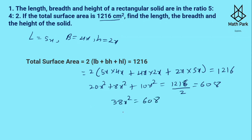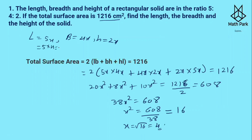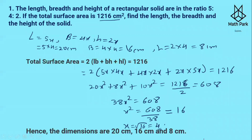So x² = 608 ÷ 38 = 16, which gives x = √16 = 4. The value of x is 4. So the length is 5 × 4 = 20 cm, the breadth is 4 × 4 = 16 cm, and the height is 2 × 4 = 8 cm. So the length, breadth, and height are 20 cm, 16 cm, and 8 cm respectively.